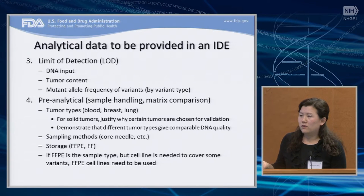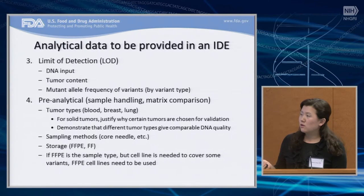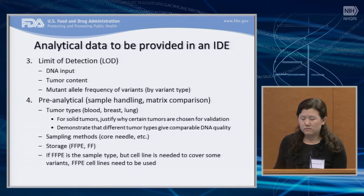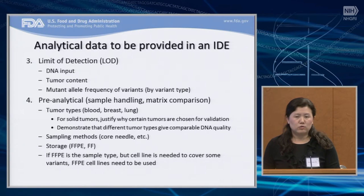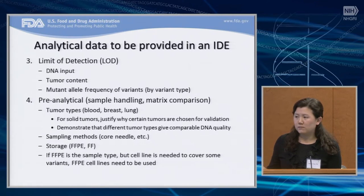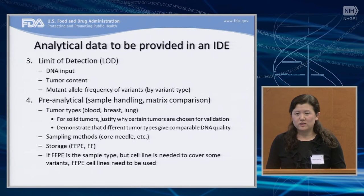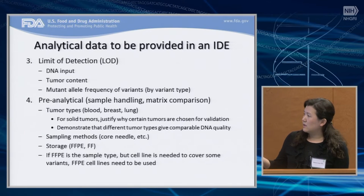Another important aspect of the analytical study for the NGS test in IDE is the limit of detection. You need to show what the minimum DNA input or genomic DNA input your device requires. For tumor content, can you detect down to 5 percent tumor in a sample? Another key metric is the mutant allele frequency of variants — for example, whether your device can detect down to 1 percent or 5 percent of SNVs. These need to be specified by different variant types. These are performance characteristics you as an investigator also want to know to confirm your device is accurate and reliable by different users.